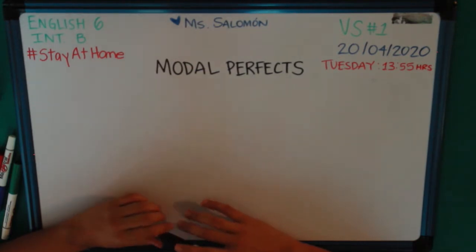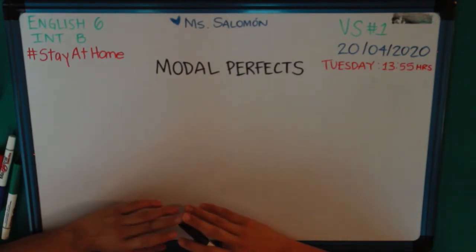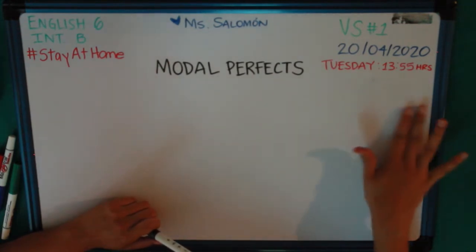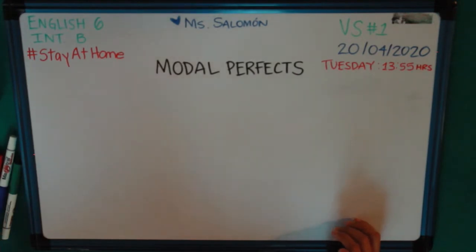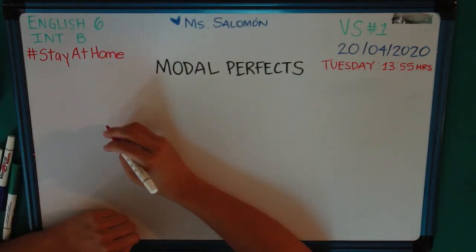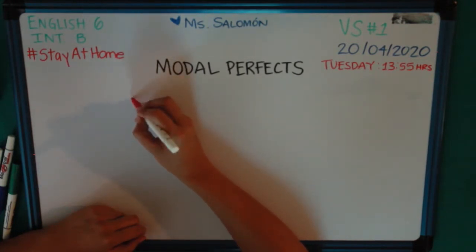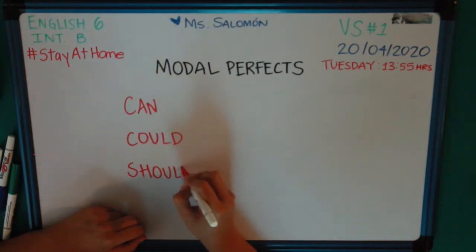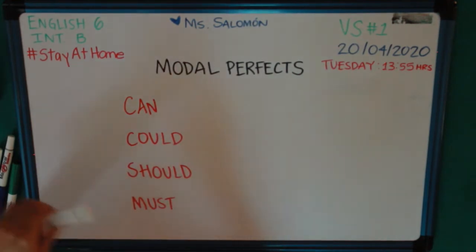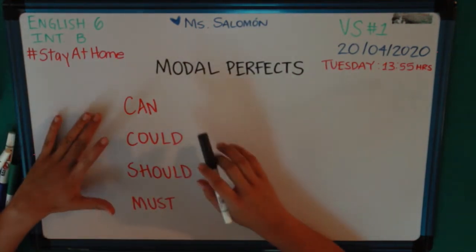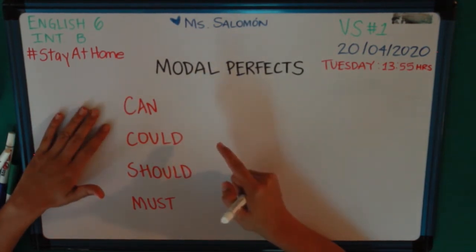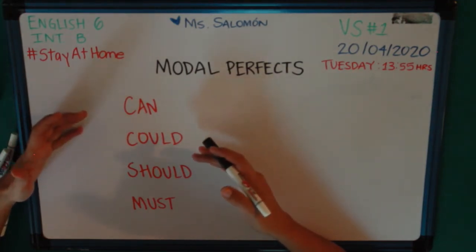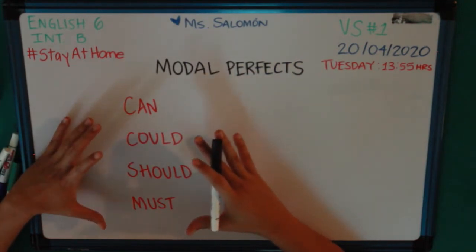Today's session will be about this topic and I hope this video will help you understand it in an easy way. Before we start with the topic, I would like to remind you about the modal verbs. In English we have something called modal verbs. These modal verbs are used to modify the main verb in a sentence. Some of them are used to express possibility, probability, certainty, or uncertainty. So these are called modal verbs.